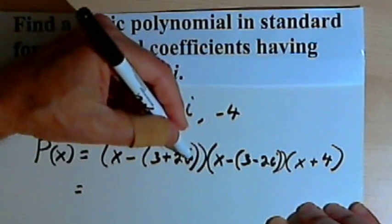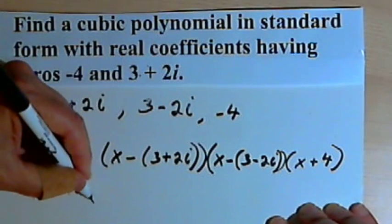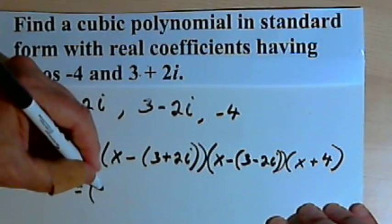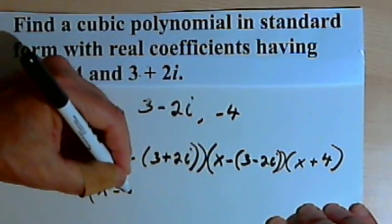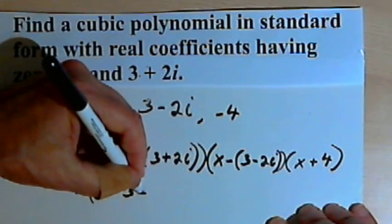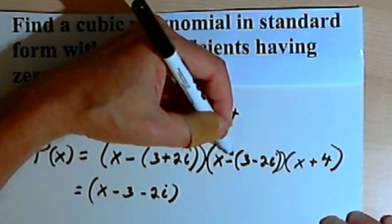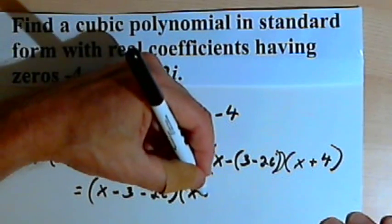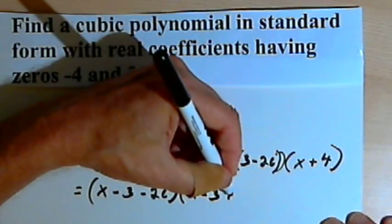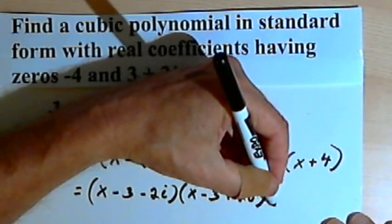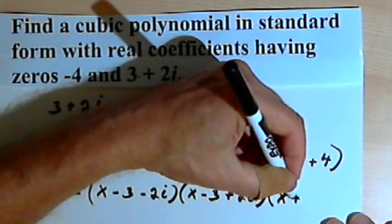So first I'm going to get rid of the parentheses that I have in here. I'm going to take this x minus open parenthesis 3 plus 2i close parenthesis and turn it into x minus 3 minus 2i. And then the next factor I'll turn into x minus 3 plus 2i. And the last factor is still going to be x plus 4.